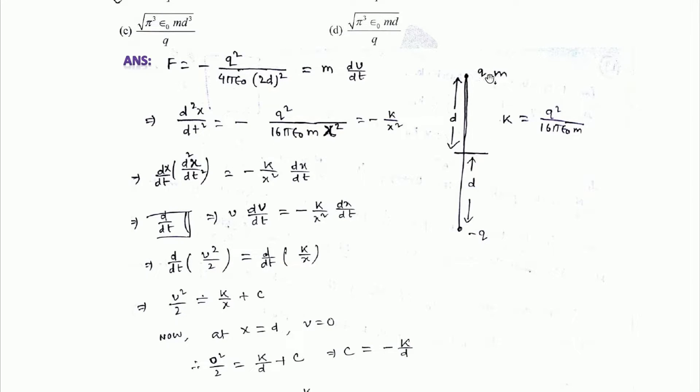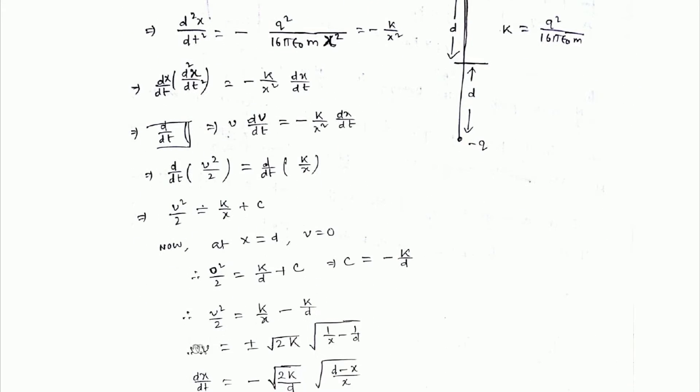We are measuring the distance from the infinite grounded plane, so x equals 0 here and x equals d at the starting point. Using v equals 0 at x equals d, we get c equals minus k/d.